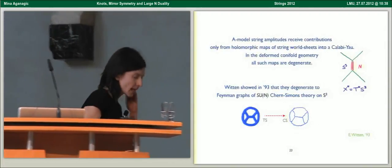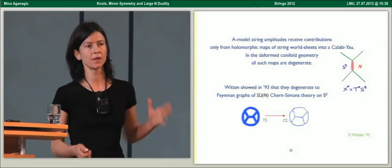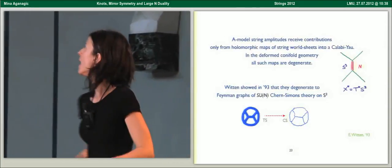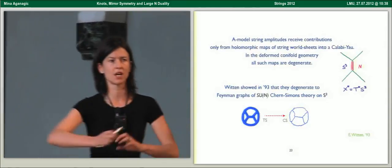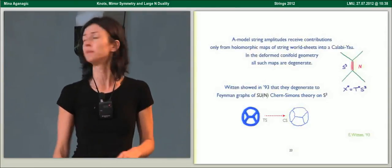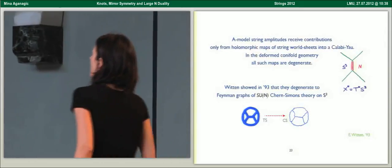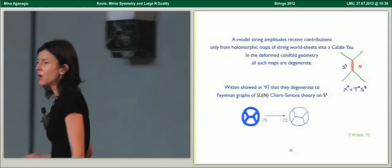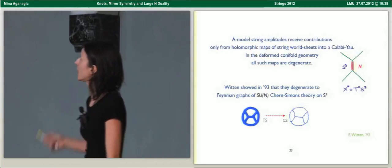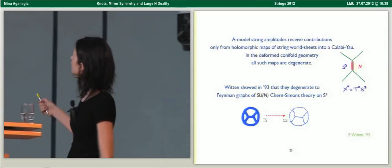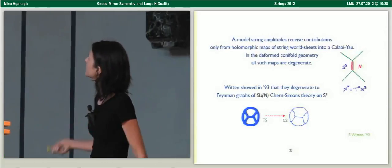The way this comes about is as follows: A-model topological string is counting holomorphic maps from Riemann surfaces into Calabi-Yau. In the deformed conifold geometry, all such maps are degenerate. There are no finite area holomorphic maps. Witten showed in 1993 that they degenerate to Feynman graphs of SU(N) Chern-Simons theory on S3.